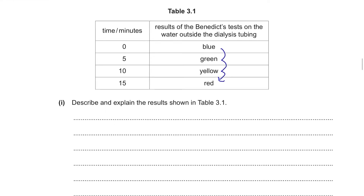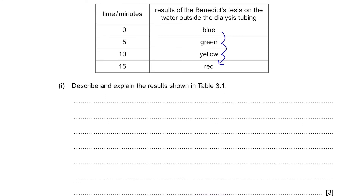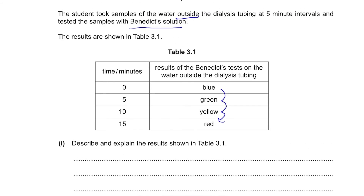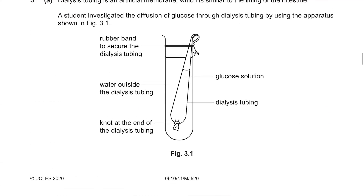Describe and explain the results shown in table 3.1. You need to know the Benedict's test and its results — it's the test for glucose. When there's no glucose present, the colour remains blue. From the table, it changed to green, then yellow, then red, indicating glucose is present. This is because the glucose inside the dialysis tubing diffused across the permeable membrane into the water outside, moving down the concentration gradient since there was no glucose in the water outside initially.